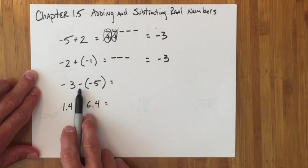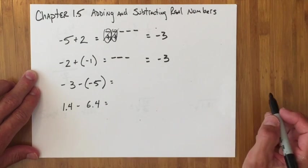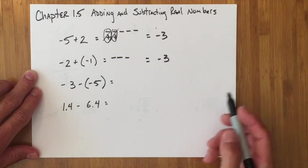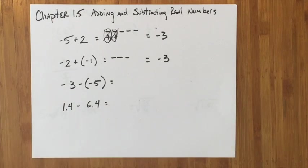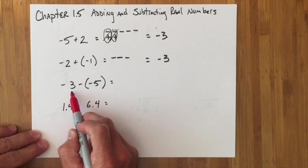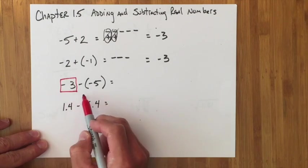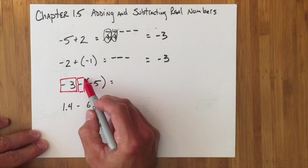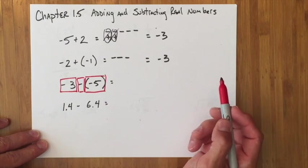It gets a little tougher when there's a minus sign, so most of your teachers would teach you some phrase like keep, change, change, or add the opposite. Any of those things would essentially mean, I'll switch colors, that you have three parts to this problem. You have the original part, the negative 3, you have the operation, in this case minus, and you have the next part, in this case negative 5.